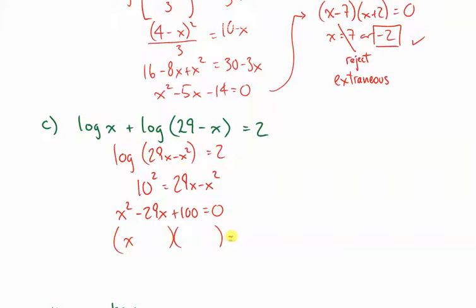Typically, the questions that you're going to get are going to be factorable. 100 is 25 times 4. I need two negatives. So, this is going to be my correct factorization. This leads to roots of 25 or 4 that are apparent. They seem to be the answer. Let's check.